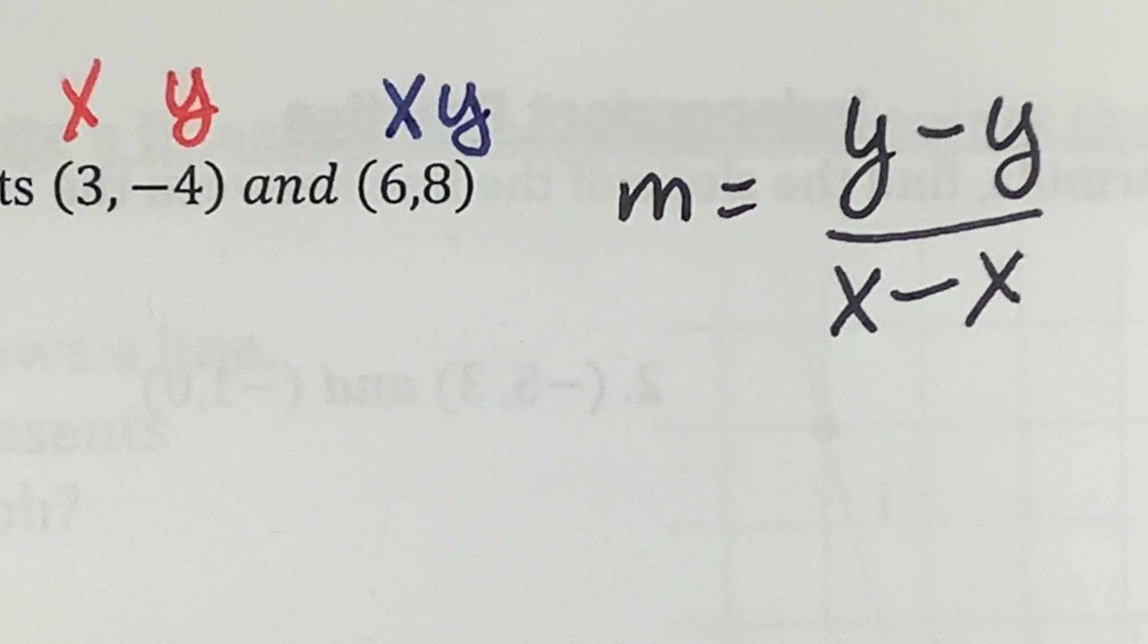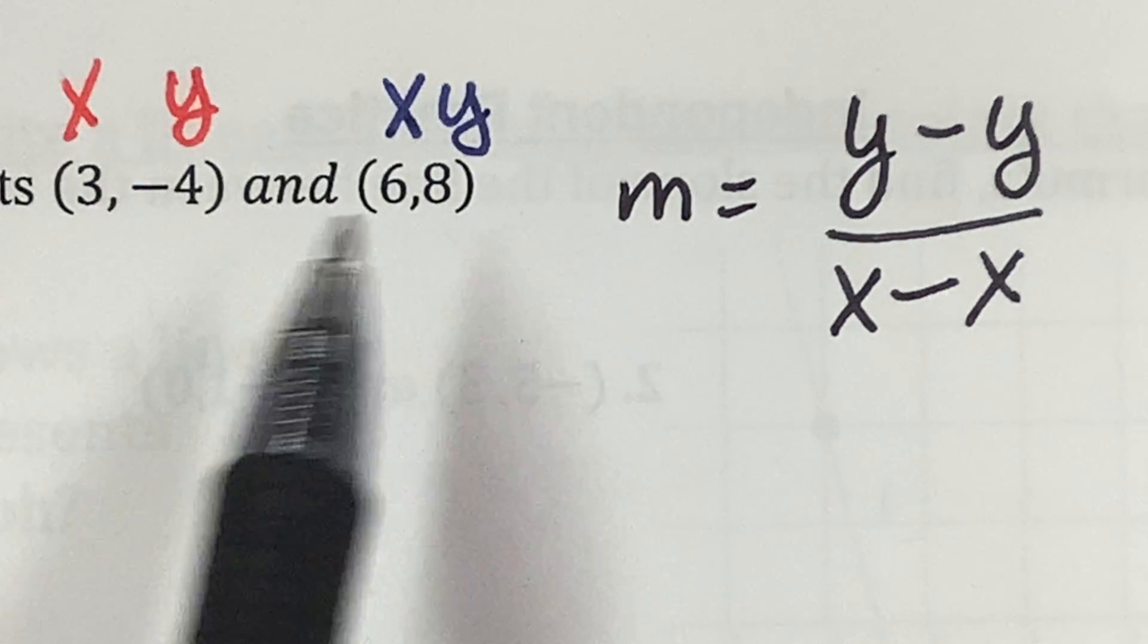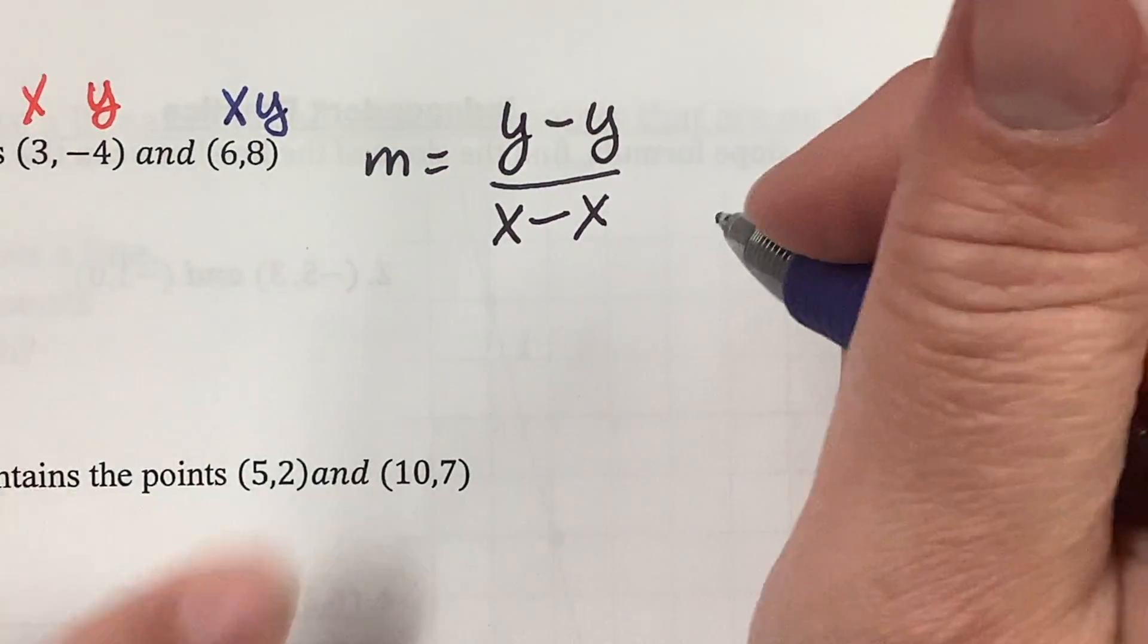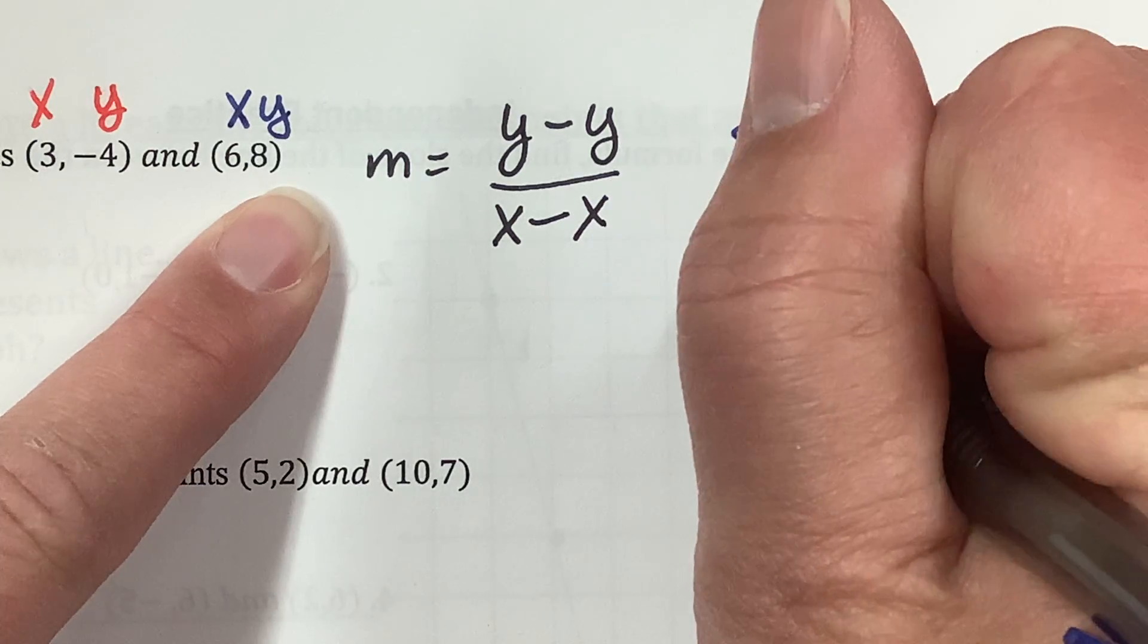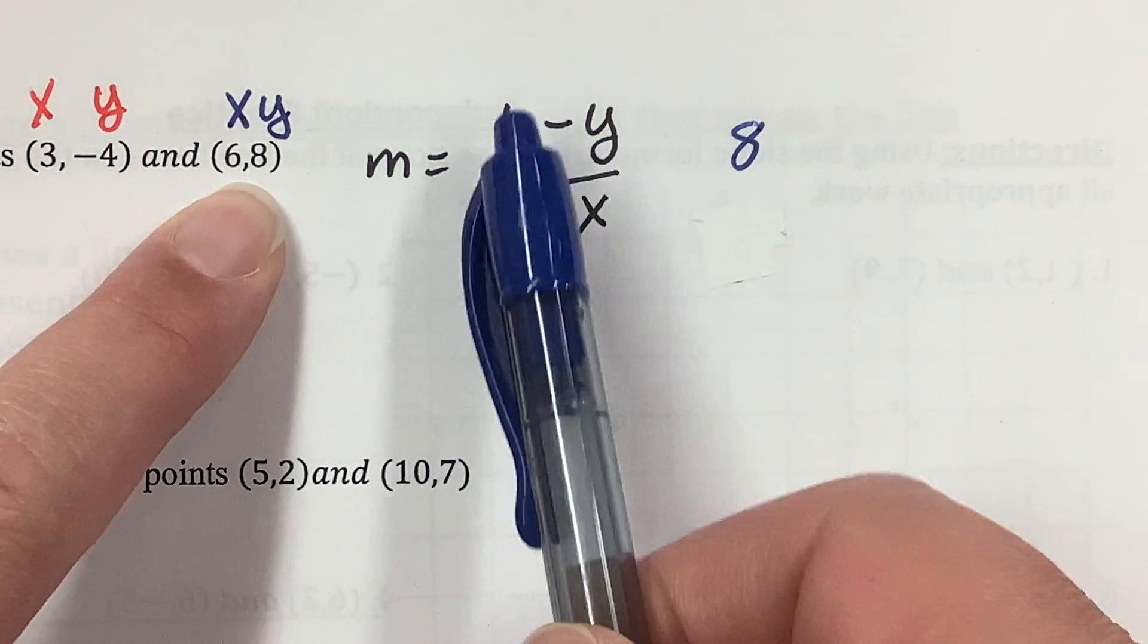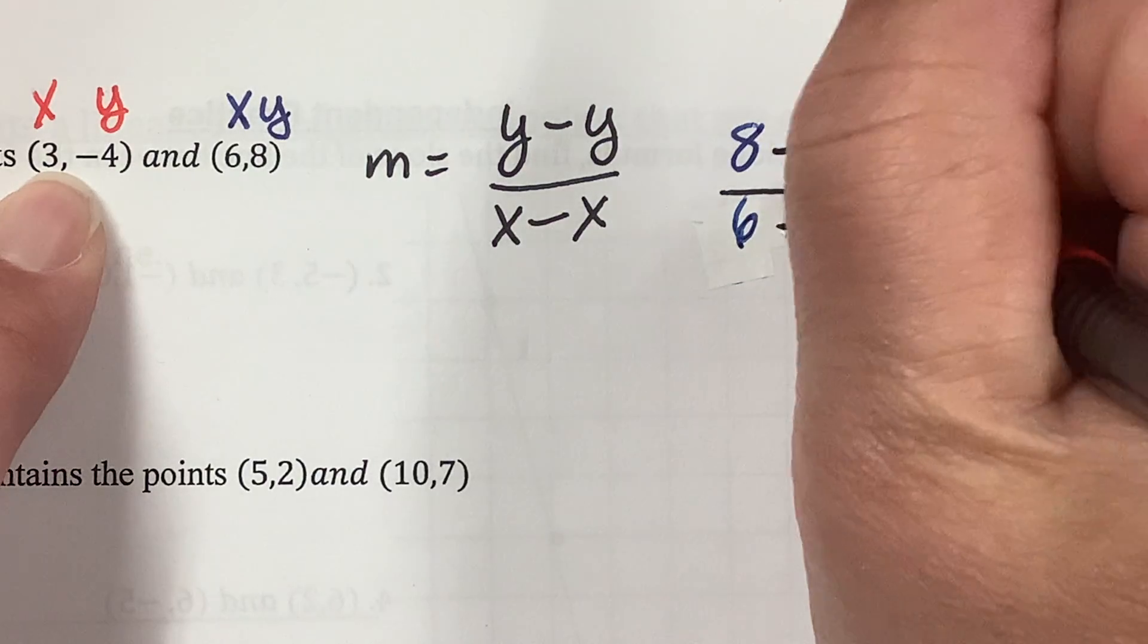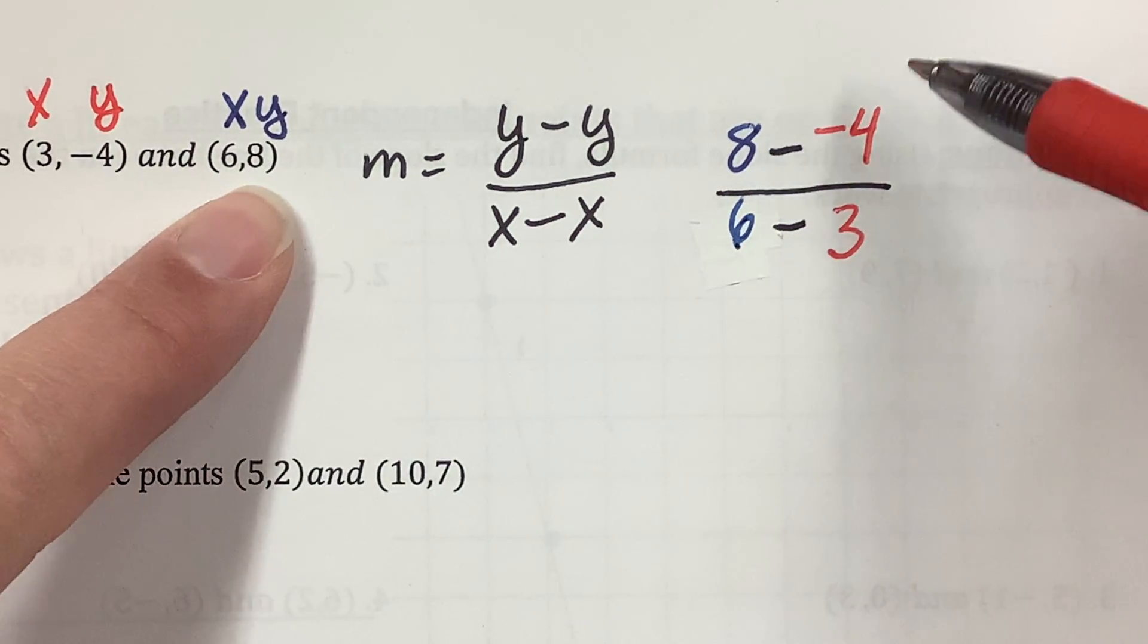So, the formula is going to be m equals y minus y over x minus x. What do you mean by that? I mean y minus y over x minus x. And it doesn't matter which one you put first. A lot of people like to start with the larger numbers because you're subtracting. So, that's what I'm going to do. 8 is a lot larger than negative 4. So, I'm going to start by doing 8 minus negative 4. So, it's y over x. 8 over 6. Y over x. And I'm subtracting y over x. Negative 4 over 3.